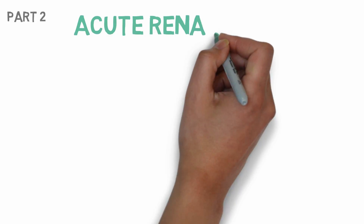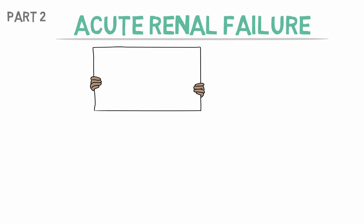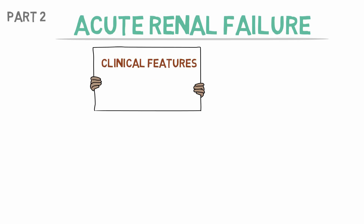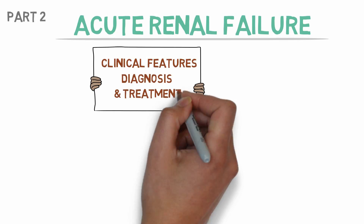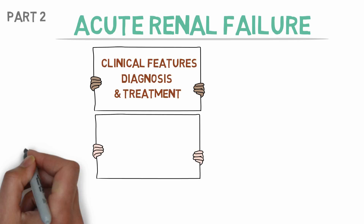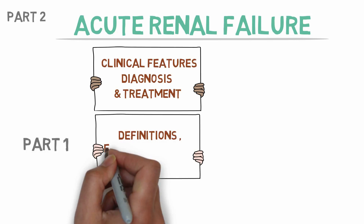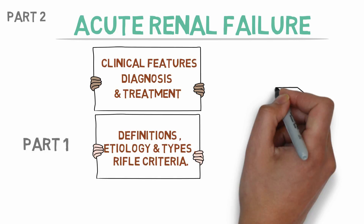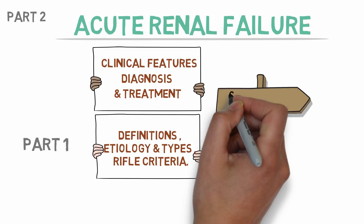This will be the second video in a two-part video series on acute renal failure. In this video we will discuss the clinical features, diagnosis and treatment of ARF. In part 1 of this video we defined acute renal failure, studied etiology and types, and also the RIFLE criteria of acute renal failure.